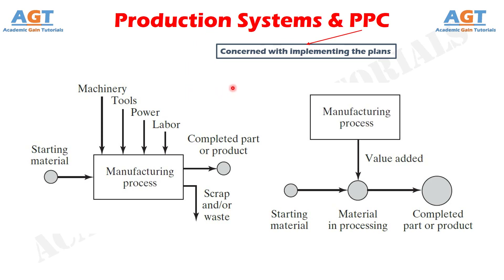The ultimate objective of production planning and control, like that of all other manufacturing controls, is to contribute to the profits of the enterprise. As with inventory management and control, this is accomplished by keeping the customers satisfied through the meeting of delivery schedules.